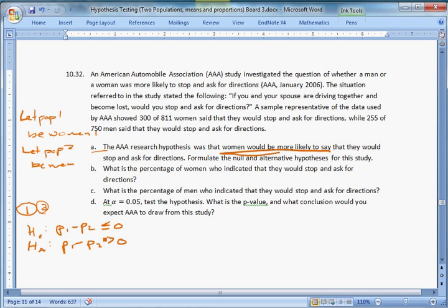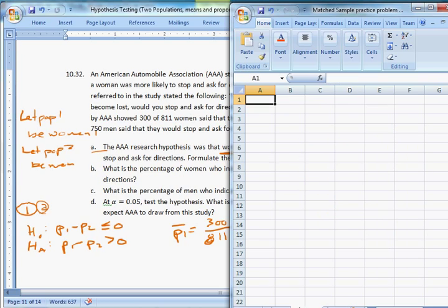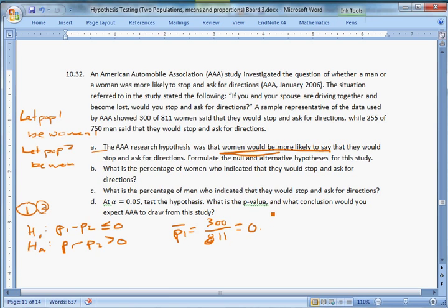Part B: What is the percentage of women who indicated that they would stop and ask for directions? Well, now this is going to help us get our samples. The percentage of women is going to be P bar 1, and it's going to be 300 out of the 811. Let me see if I still have my Excel spreadsheet open. I do. 300 divided by 811, it's going to be 0.3699, 37%. That's part B. 37% of women would.